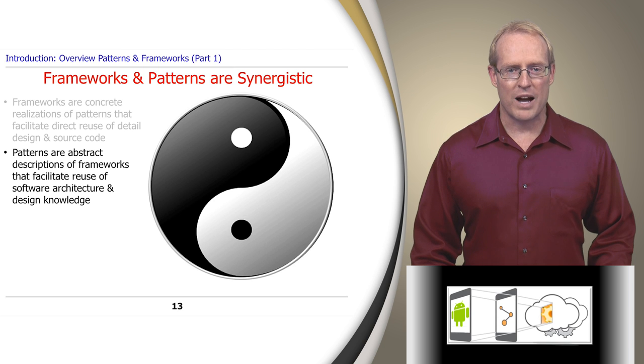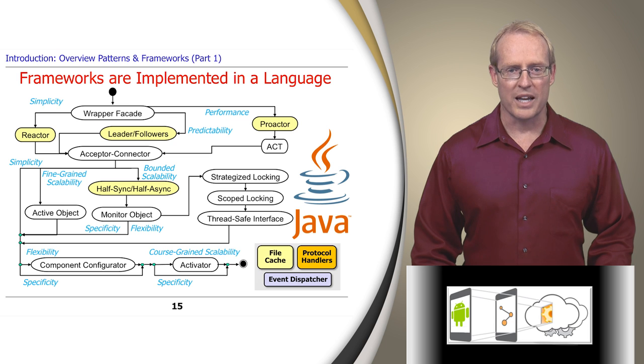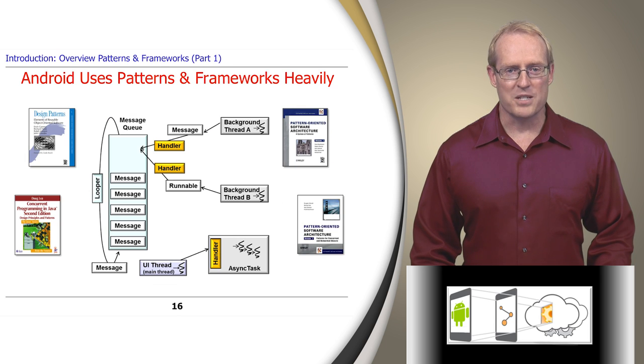Patterns are generally described in programming language independent ways, whereas frameworks are generally implemented in a particular programming language. Android applies many patterns to implement its Java concurrency and communication frameworks, some of which we'll outline next.